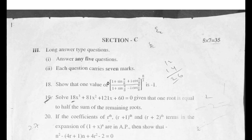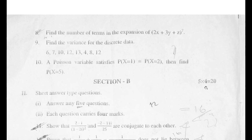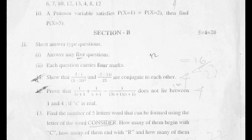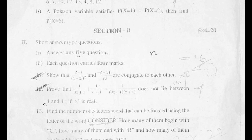Now we go to Section B, in which there are seven SAQs out of which you have to answer any five. The first SAQ is from Chapter 1 Complex Numbers and the second SAQ is from Chapter 3 Quadratic Expressions.